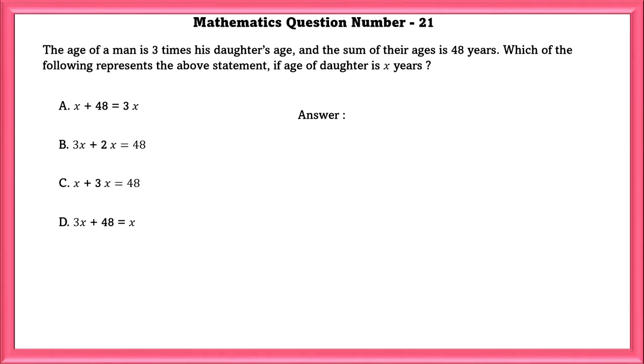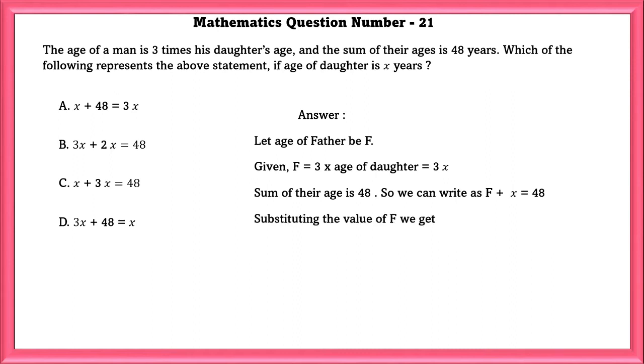Mathematics Question Number 21. The age of a man is 3 times his daughter's age and the sum of their age is 48. Which of the following represents the above statement if age of the daughter is X years? Let the age of father be F. Given F is equal to 3 into age of daughter, which is equal to 3X. Sum of their age is 48. So we can write F plus X is equal to 48. Substituting the value of F, we get 3X plus X is equal to 48.